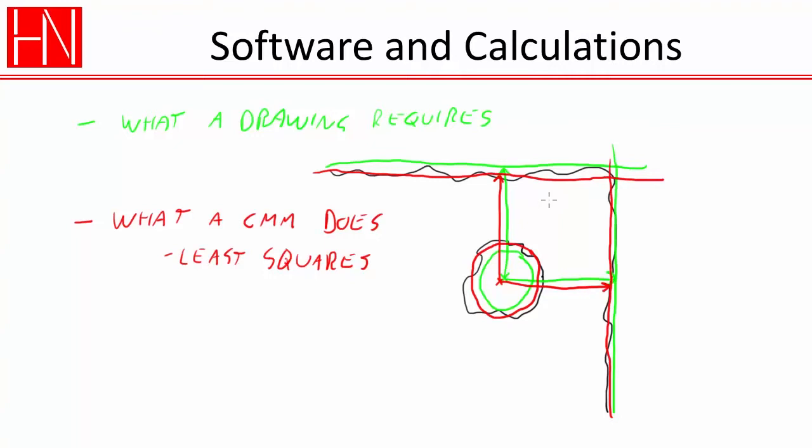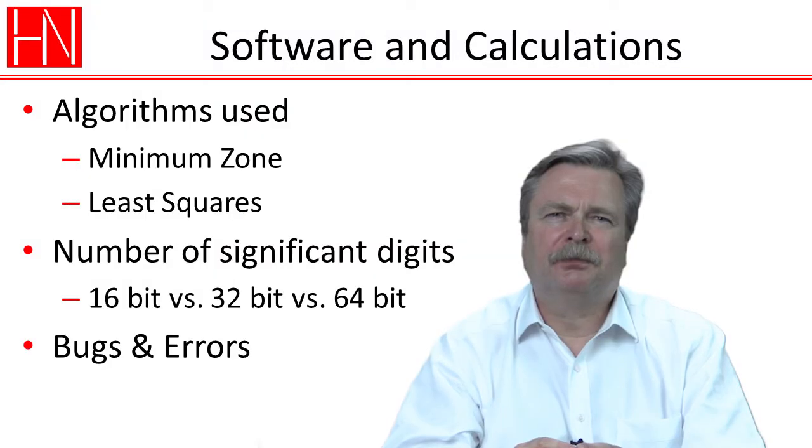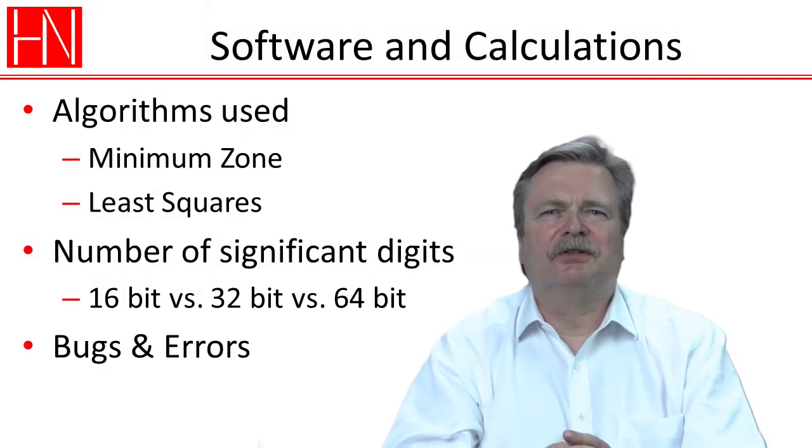it's different from what a drawing usually requires. So we have to be aware if our measuring equipment makes calculations a different way than what the requirements are, and what we're really being asked to measure. That's one way that software and calculations can be a factor in the uncertainty estimation, at least in principle.